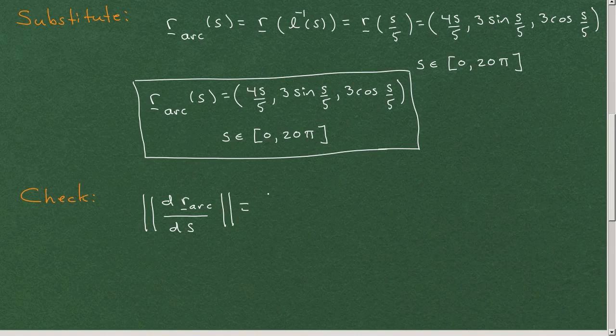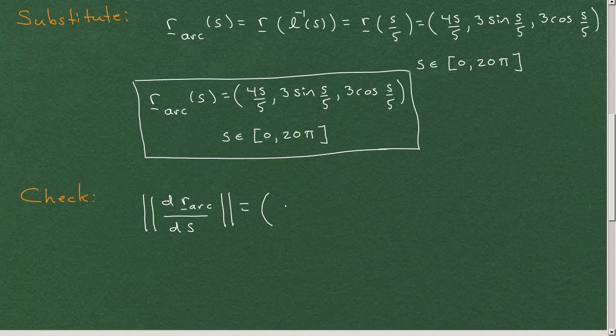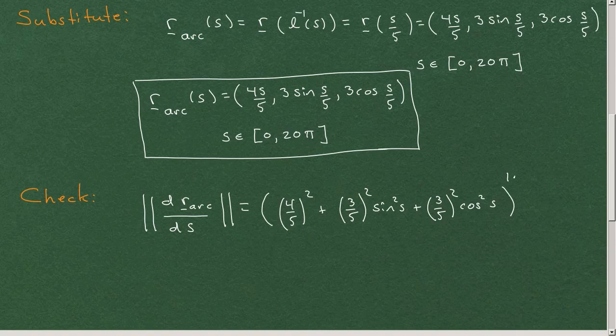And so I won't go through all this, but, well, maybe I will a little bit. So you differentiate, you get 4 fifths squared plus 3 fifths squared sine squared, 3 fifths squared cosine squared to the 1 half, which indeed is equal to 1.